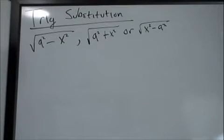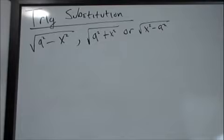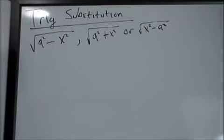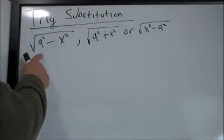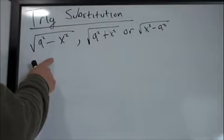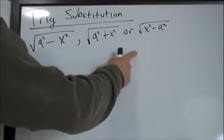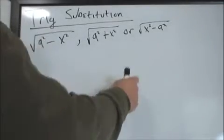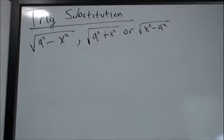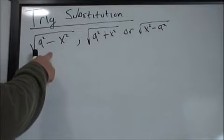In this video we're going to talk about trig substitution, which is really nothing more than a fancy change of variables technique — really just a fancy version of u-substitution. It's used in special cases involving radicals. If your integrand has a radical like √(a²-x²), √(a²+x²), or √(x²-a²), you can use trig substitution.